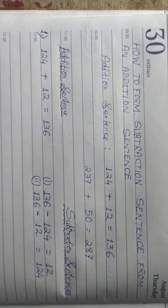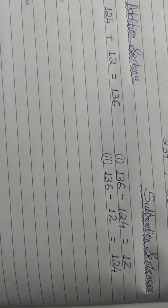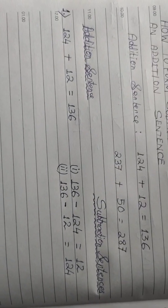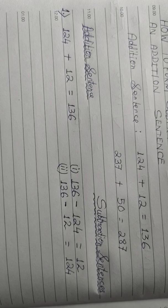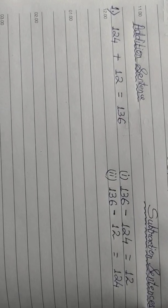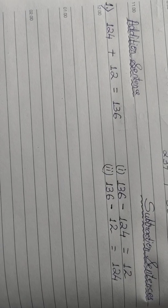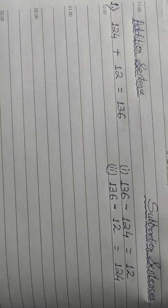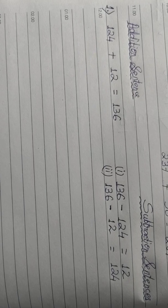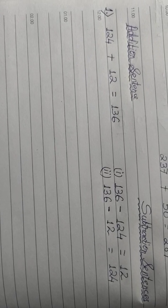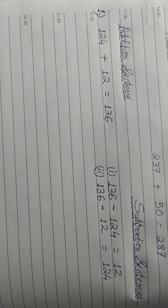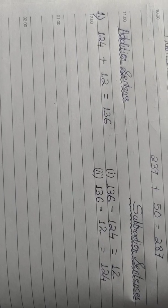Coming down here, from the first addition sentence of 124 plus 12 equals to 136, we can actually make two subtraction sentences. Just see over there. Here the addition sentence is on the left hand side. From this, the answer that we get is 136.